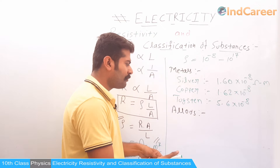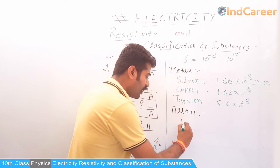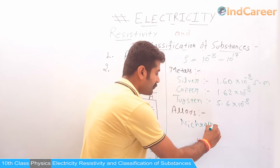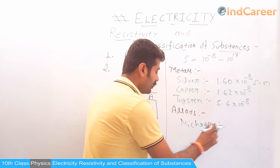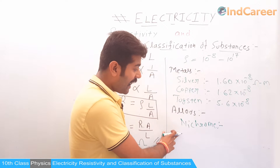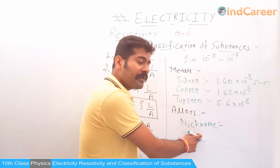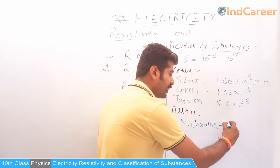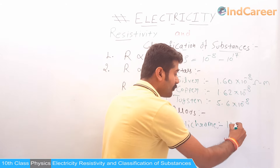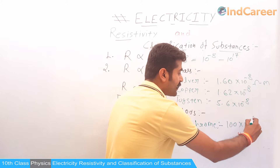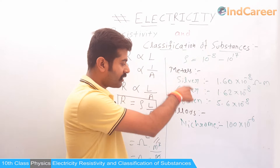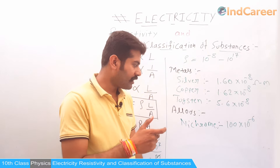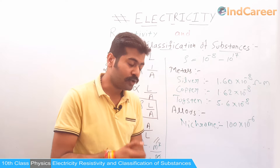One important alloy example is nichrome, which is made up of nickel and chromium. Nichrome wires are used in electric heaters. They are used there because their resistivity is quite high compared to metals. This is also a common examination question — why is nichrome wire used in electric heaters?